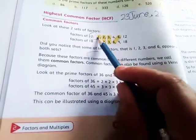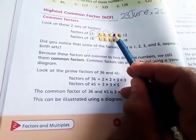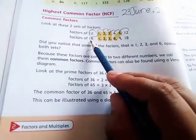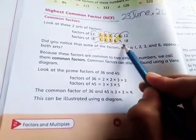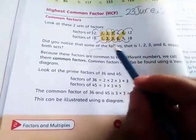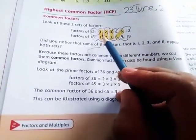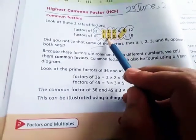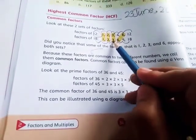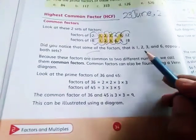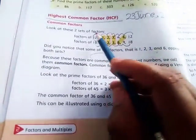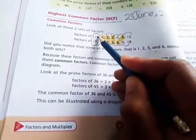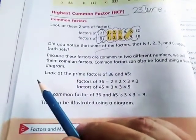18 also comes in all these tables. Now we will take the common factors. You can see 1 in both, 2 in both, 3 in both, and 6 in both. It means 1, 2, 3, and 6 are the common factors of 18 and 12.